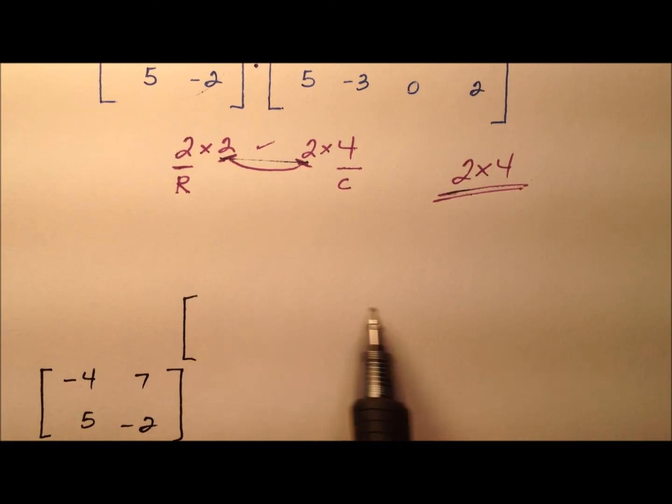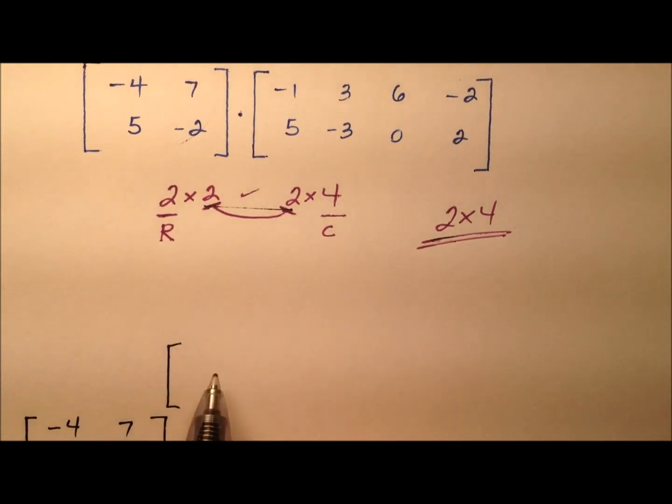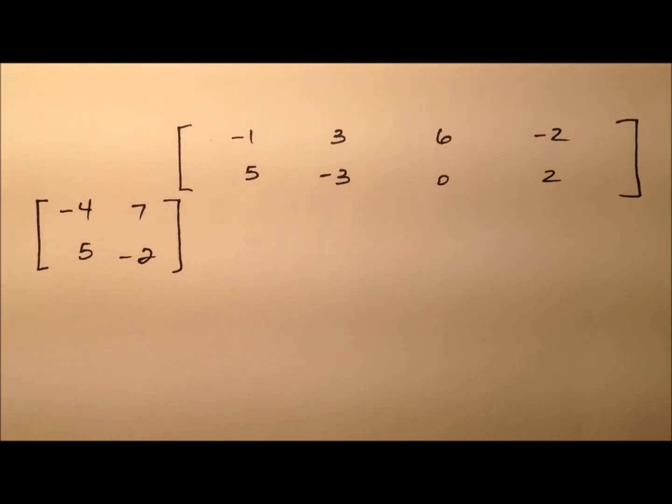So we have negative 1, 5, 3, negative 3, 6, 0, and negative 2, 2. Okay, right there, so I think we're ready to go.